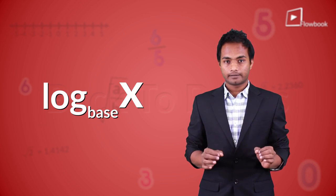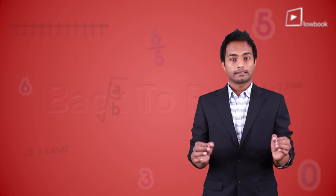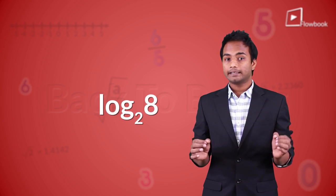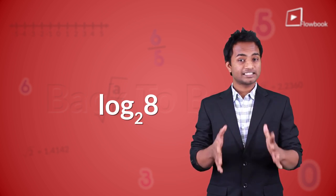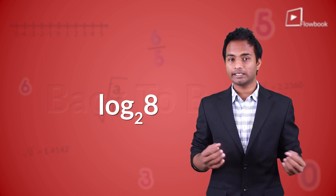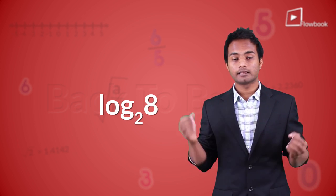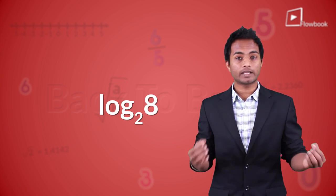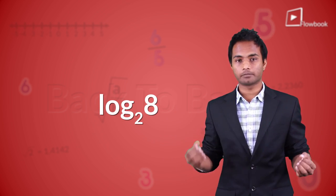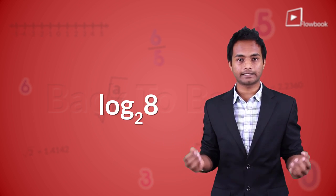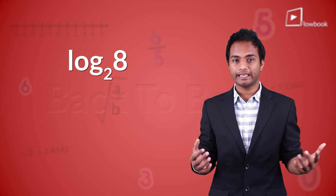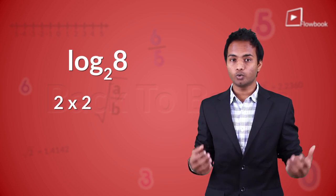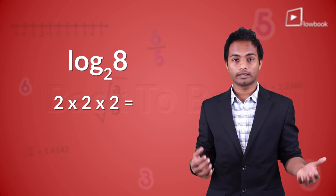So if you want to write log 8 to the base 2, this is how it's written. This just means: how many times do I need to multiply this base with itself to get this number, which in this case is 8? And that's why we know log 8 to the base 2 is 3, because 2 into 2 into 2 is 8.